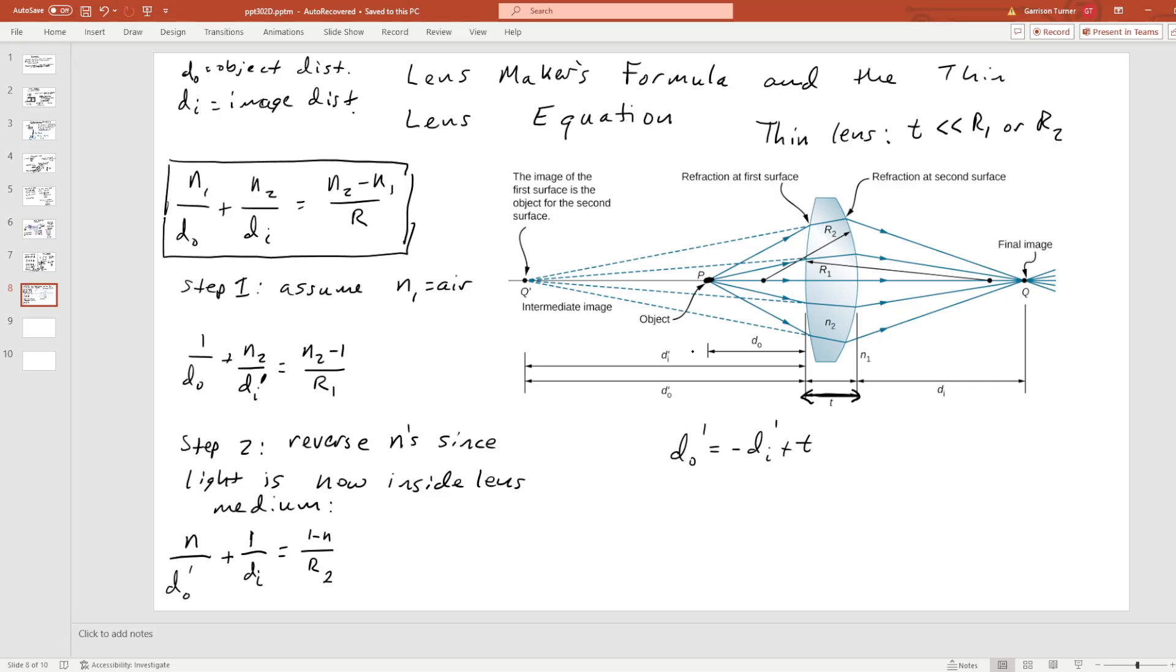And we're going to make the simplifying assumption that our object is in air, and N_2 is our material. Usually it'll be like glass or acrylic or something like that. It doesn't really matter, but if you want to make a lens, a rigid lens, then those are two very common materials. So, inserting N_1 equals air, well, if that's the case, then this just equals one, so we might as well set that to one.